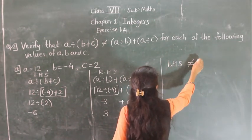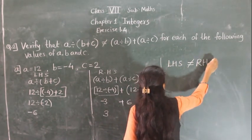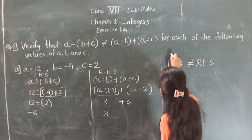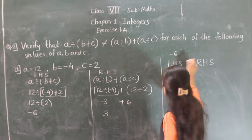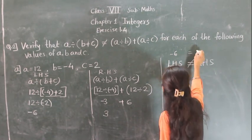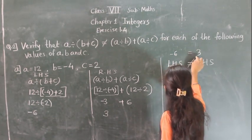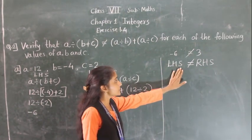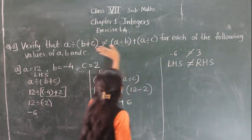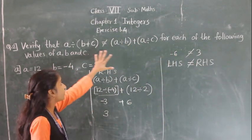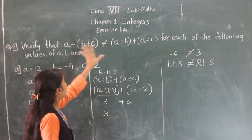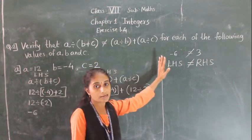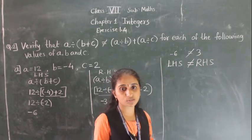So RHS is minus 3 plus 6. Minus plus minus, so subtract 3 from 6, and since 6 is the greater number the sign is positive. RHS equals plus 3. LHS is minus 6 and RHS is 3, so LHS is not equal to RHS. Hence it is verified that a divided by (b plus c) is not equal to a divided by b plus a divided by c.